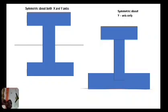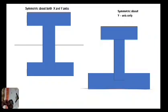If a given section is symmetrical about the x-x axis or y-y axis, the center of gravity of the section will lie on the axis of symmetry. If a given section is symmetrical about the x-x axis or y-y axis, the center of gravity of the section will lie on the axis of symmetry.